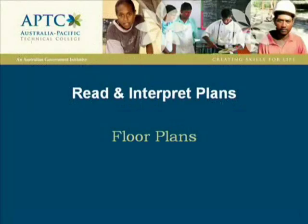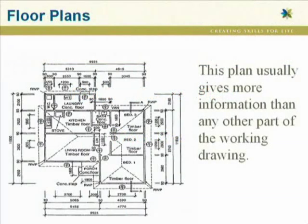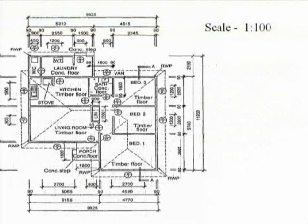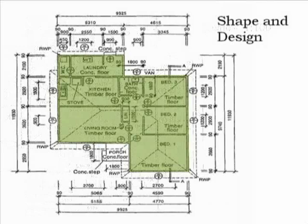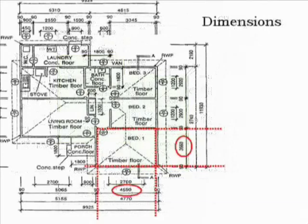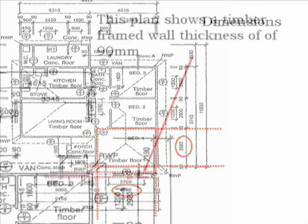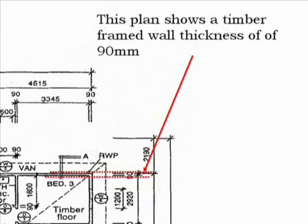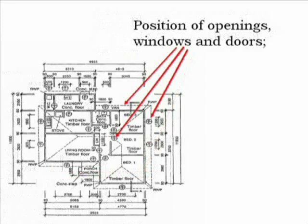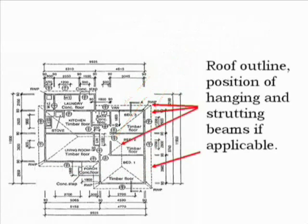Floor plans are very important. There is a lot of information that can be obtained from a floor plan — these drawings usually give more information than any other working drawing. Floor plans are usually drawn to a scale of 1 to 100. The floor plan shows the basic design of a construction project. By using the floor plan, you can determine the dimensions of any particular room or feature. The floor plan also shows wall thicknesses and the position of doors and windows. From most floor plans you'll be able to discern the basic shape of the roof by means of the roof outline, and on this particular floor plan you can also see the hanging and strutting beams outline.